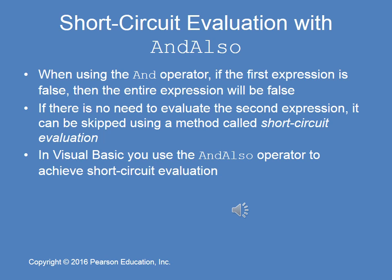In some instances you want the first false to stop processing the rest. A good example is a divide-by-zero situation — if you check that a denominator variable is not equal to zero and that evaluates to false, you don't want to evaluate the other expression. We have what's called 'AndAlso' for short-circuit evaluation. If the first expression is false, the entire expression will be false, so the second expression can be skipped using AndAlso.